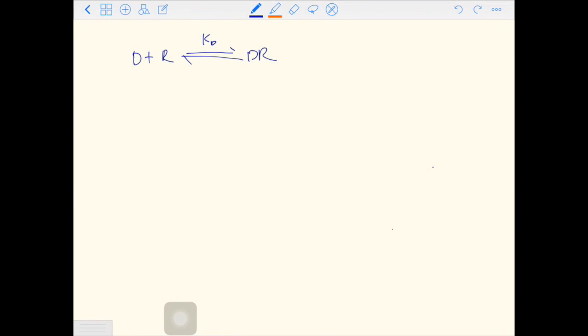The DR can shift to an active form, DR star, which will generate a response. And intrinsic activity is alpha star. So we have another constant here.